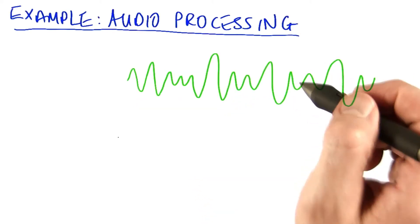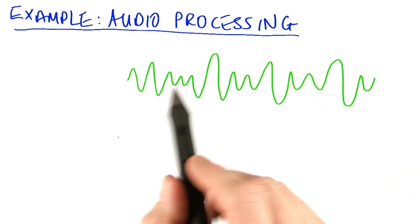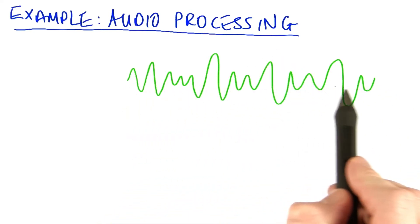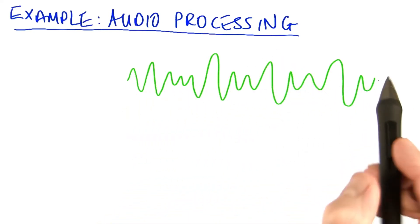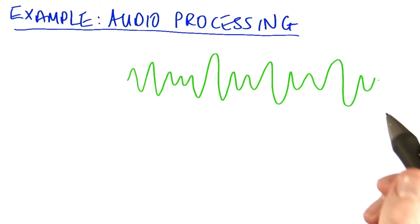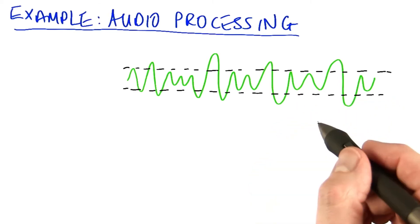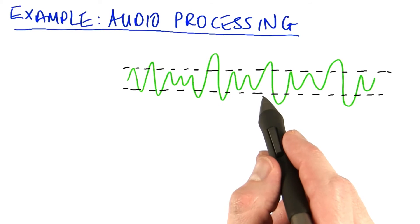So here's an example. Suppose we want to adjust the volume of an audio stream. If we've got an incoming sound wave, this green wave right here, a lot of sound processing requires us to have a certain maximum volume, which means constraining the wave to fit within these two dashed lines right here.